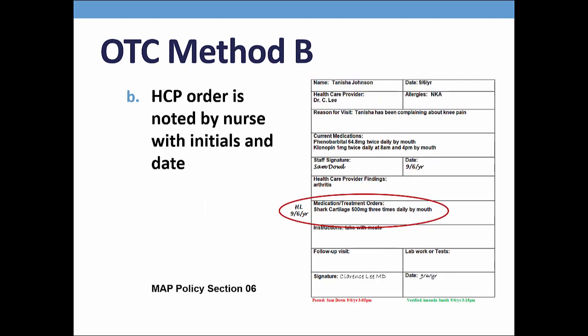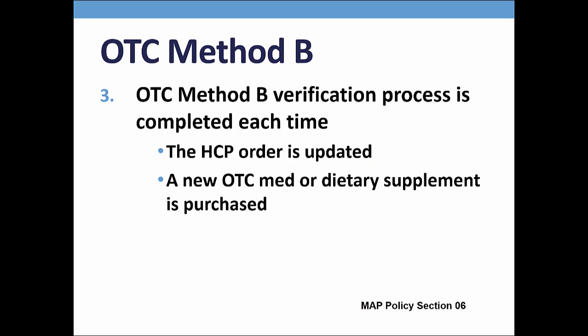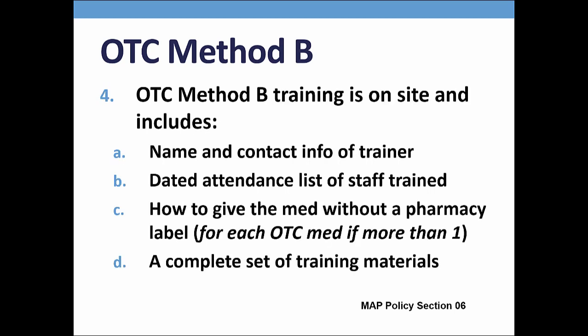The HCP order must be noted by the nurse that the verification was completed. This process must be completed each time the order is renewed or rewritten and/or each time a new container of the medication is purchased. In addition, staff must be trained in over-the-counter method B as they will be using a manufacturer's label and not a pharmacy label to complete the three checks of the five rights. The training is product specific — meaning if the person is ordered vitamin D3 and also shark's cartilage, a training must be completed for each over-the-counter product. Documentation of the training as seen on your screen must be maintained on site.